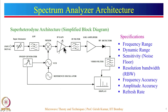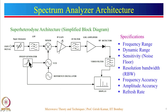The IF signal available at the mixer output is processed using an IF amplifier and an IF filter. The power level of this IF signal, which corresponds to the input signal frequency components' power level, is detected using an RF detector and a log amplifier. The signal is further processed using a video filter and given to the y-axis of the display. The x-axis, corresponding to frequency, is governed by the sweep generator output, which generates a sawtooth voltage waveform sweeping the LO frequency from lower to higher values.